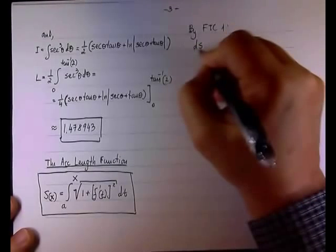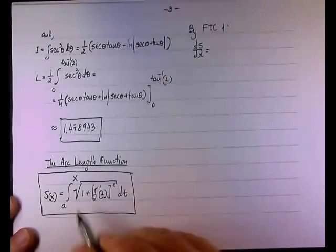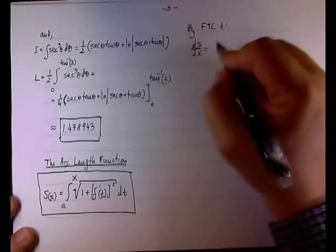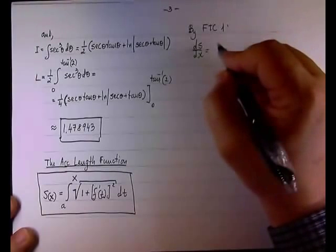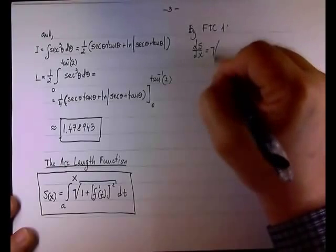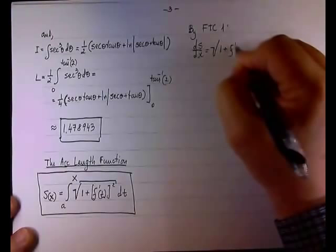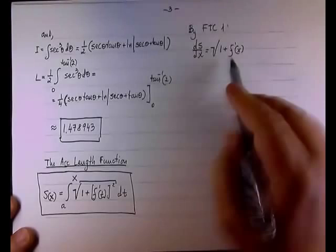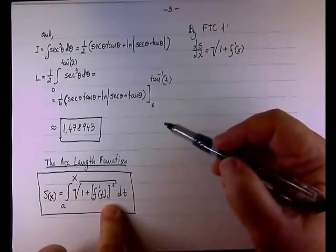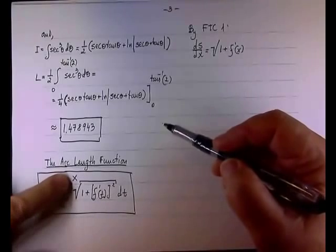So in this case, if s is the function, then ds dx, the derivative of the integral, gives you back the integrand, and therefore we'll have the square root of one plus f prime, but now it will be f prime of x. So that intermediate variable of integration